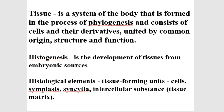Besides cells, other structures or units that can compose tissue are postcellular structures. Postcellular structures are tissue-forming units which we cannot call cells because of the absence of some parts, like the nucleus or elements of the cytoplasm. During differentiation and development, they lose some elements like nucleus or organelles, and finally become structures we call postcellular structures.